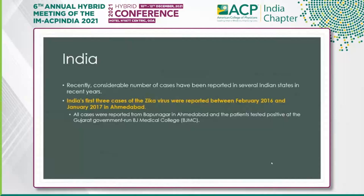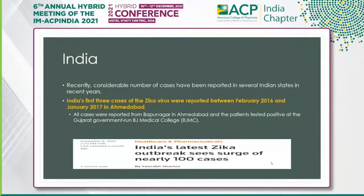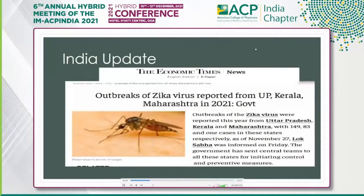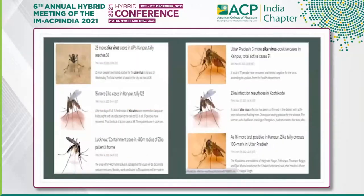Antibodies to Zika have been detected in many countries. Recently, a considerable number of cases have been reported in several Indian states. India's first three cases were reported between February 2016 and 2017 in Ahmedabad. India's latest Zika virus surge reached nearly a hundred cases. The Economic Times reported outbreaks of Zika virus from Uttar Pradesh, Kerala, and Maharashtra in 2021.